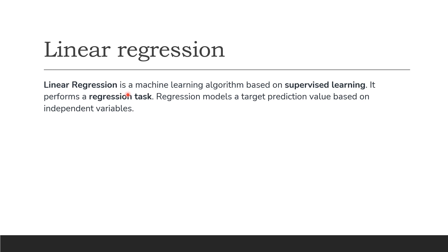Linear regression is a machine learning algorithm based on supervised learning. Machine learning algorithms are classified into three categories: the first is supervised learning, the second is unsupervised learning, and the third is reinforcement learning. Supervised learning is where you have input variables x and an output variable y, and you use an algorithm to learn the mapping function from the input to the output.